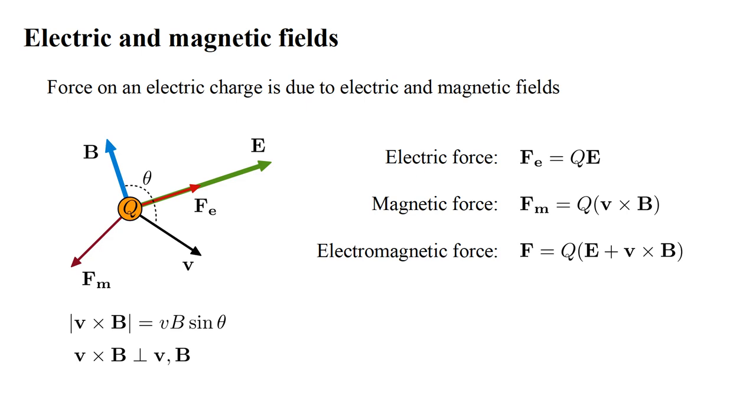Combining these two forces, we have the electromagnetic force, F equals Q times quantity E plus V cross B.